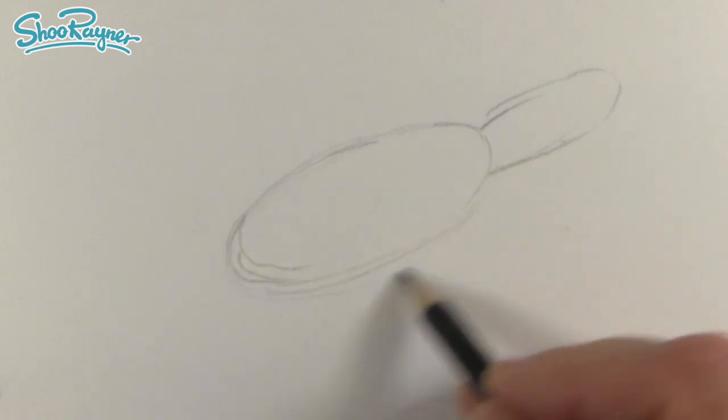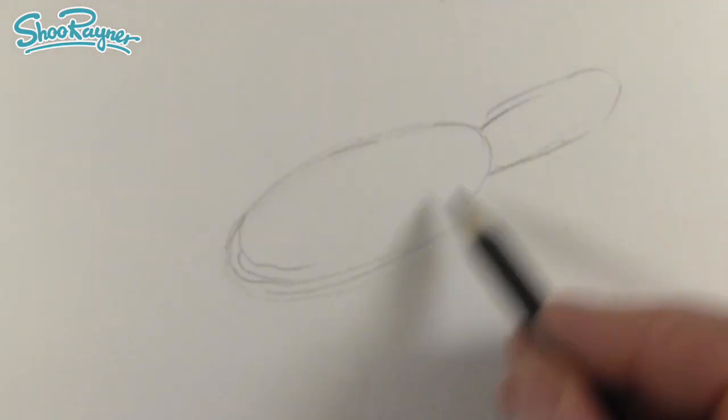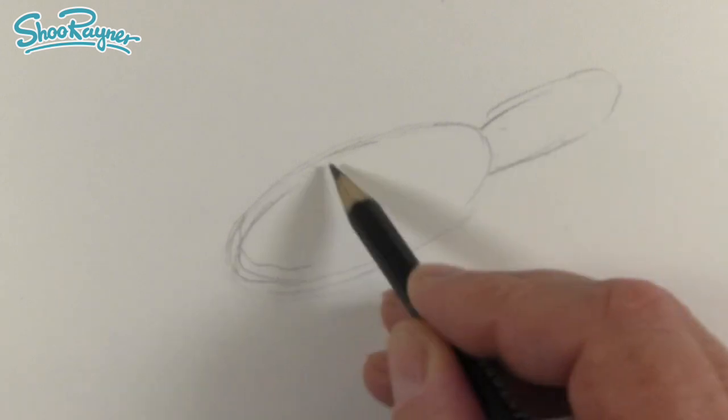So we want to draw this kind of long stretched oval, it's an ellipse and then that has that kind of tail on the end.